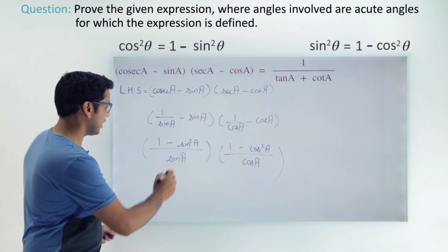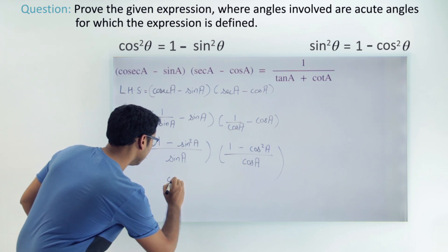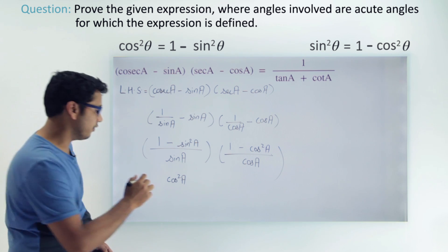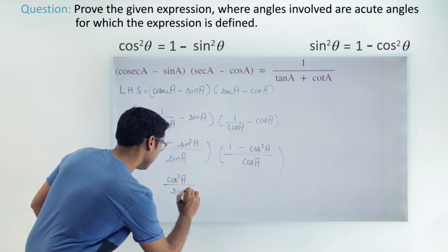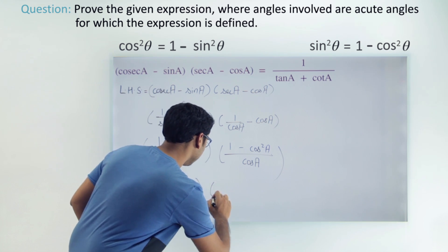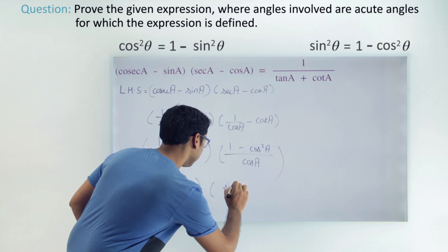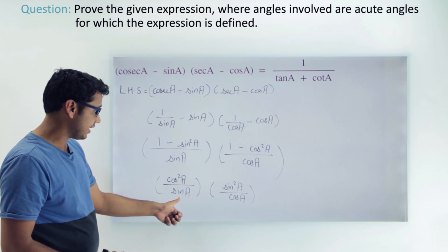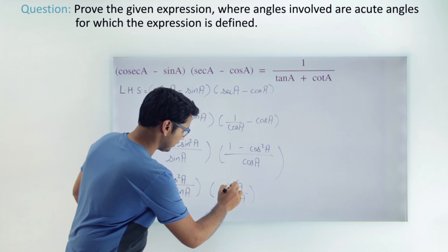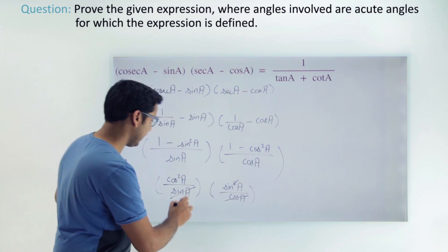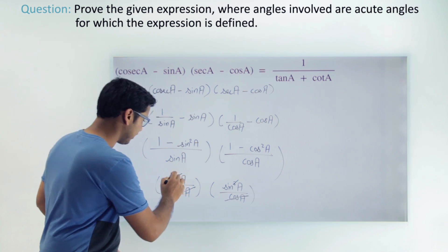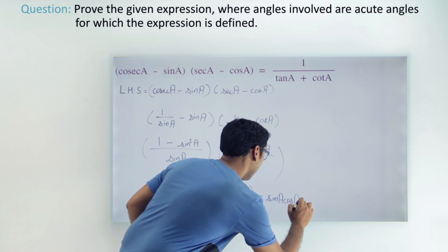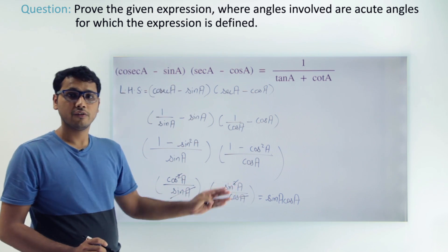So, 1 minus sin squared a becomes cos squared a, giving us cos squared a over sin a. And 1 minus cos squared a becomes sin squared a, giving us sin squared a over cos a. Simplifying, one sin a cancels and one cos a cancels, and we are finally left with sin a times cos a.